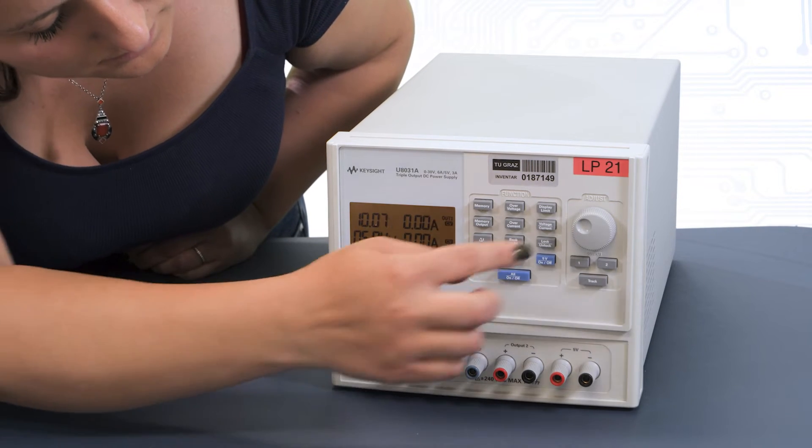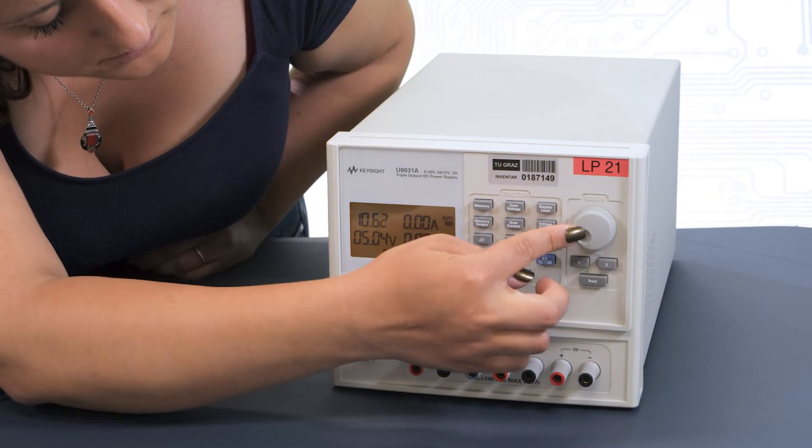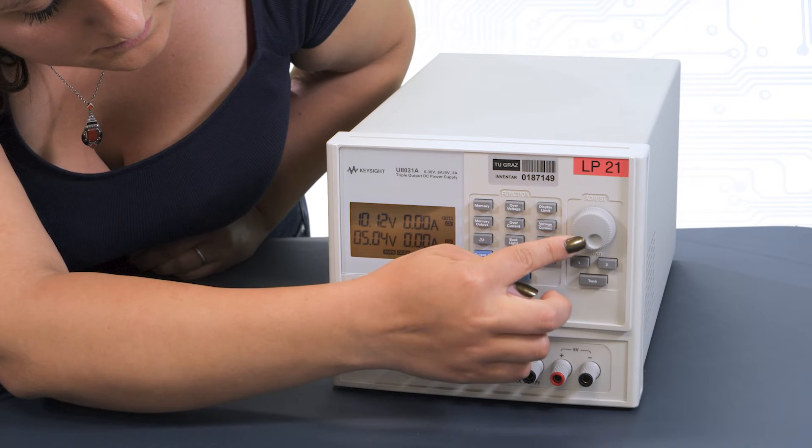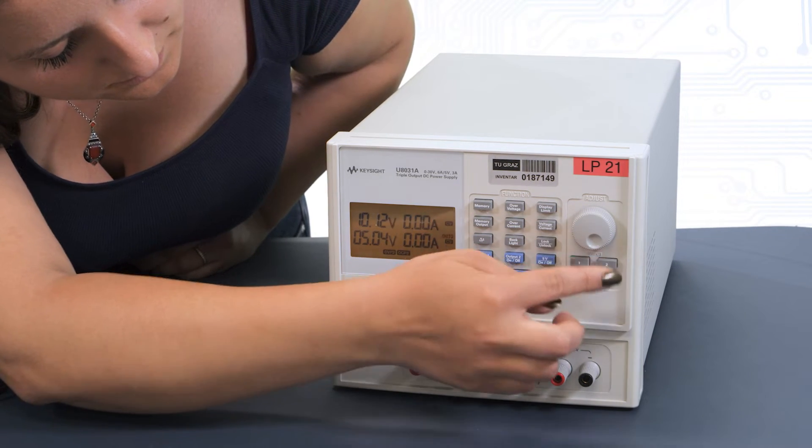If both adjustable outputs are active, you can switch between them with the buttons below the rotary control.